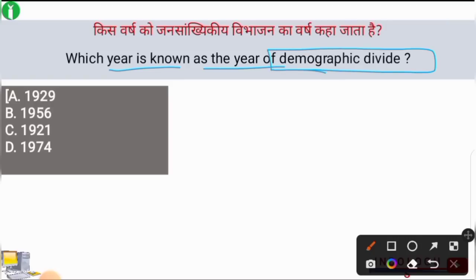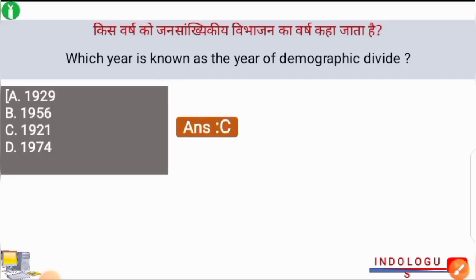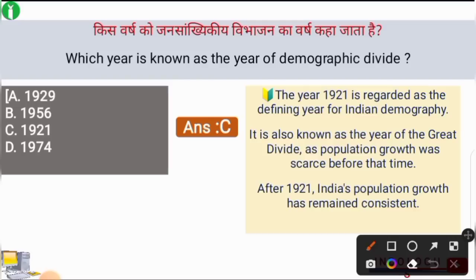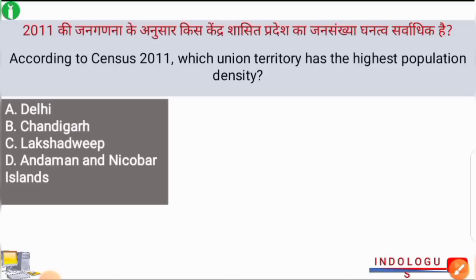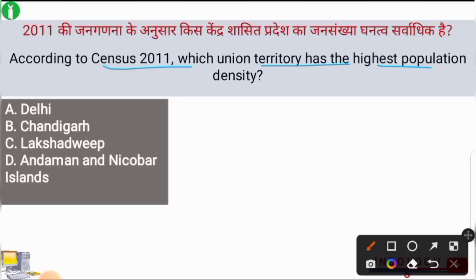Next question: which year is known as the year of demographic divide or the year of great divide? The correct answer is option C — 1921. The year 1921 is regarded as the year of the demographic divide. Only in 1921 was a negative growth in India's population seen; after 1921, India's population growth remained consistent and kept increasing.